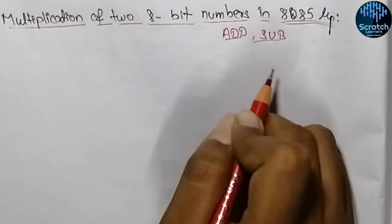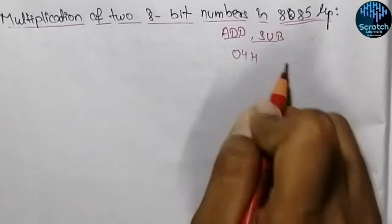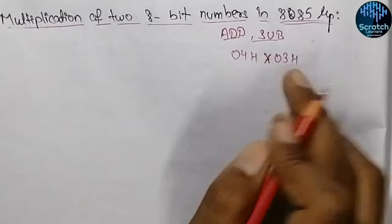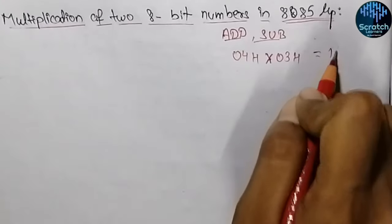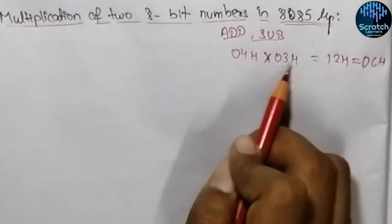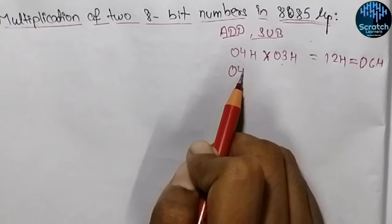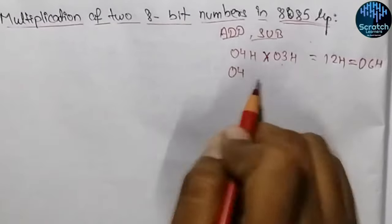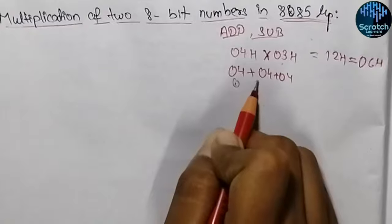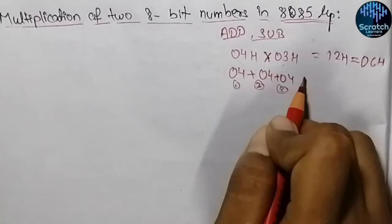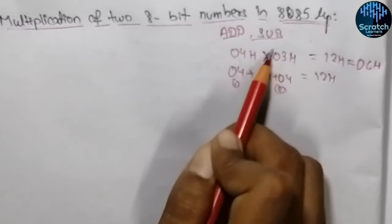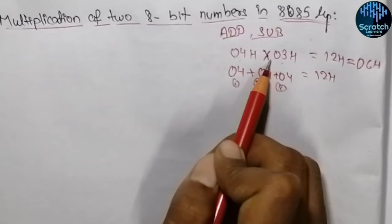See if we have two numbers, let's say 04 hex and 03 hex, and we need to multiply both of these numbers. If we multiply them in decimal, we will get 12, but in hexadecimal this will give us 0C hex. So how we will get this result? We can add 04 hex with itself 3 times: 04 plus 04 plus 04. Here we have added it 3 times — this is 1, this is 2, and this is 3 — and this will give us 12 hex. So in multiplication, if a number is added with itself that number of times, we will get the result of multiplication.